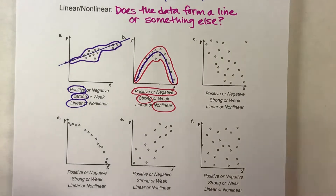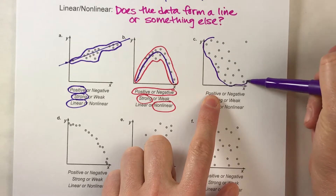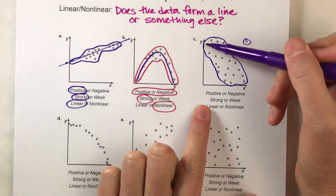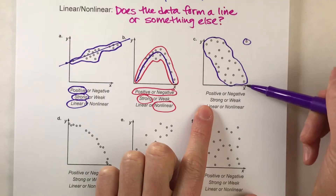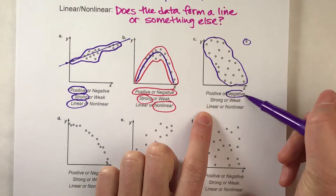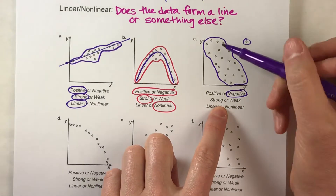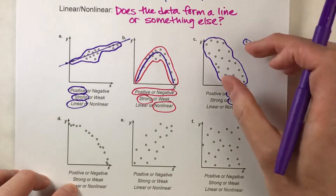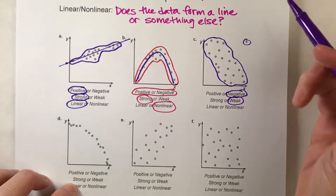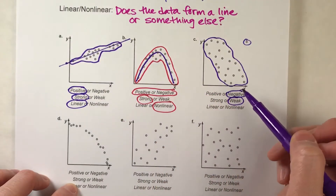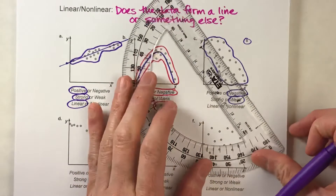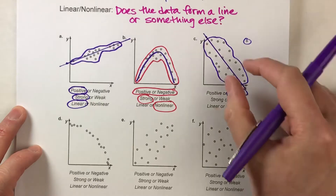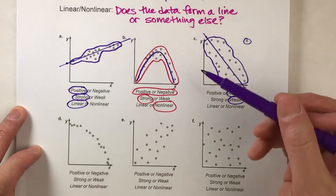On example C, most of the data falls in one group, although there is one outlier out there. Notice it's going down and to the right for the most part, so this is a negative association. Is it strong or weak? Well, it kind of follows the pattern but it's fairly spread out, so I'm going to say this is weak. And for linear or nonlinear — if I draw a line through here, you can see it basically follows that line. It's a little spread out, but it's linear.